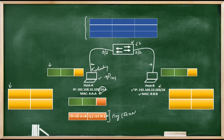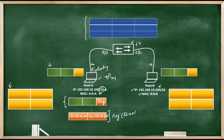But wait — to send this packet over the ethernet interface, Host A needs to put the source and destination MAC address. Here is the new packet: this orange box represents the ping packet. I have put two green boxes to represent the ethernet frame. The source MAC address of this frame will be A:A:A.